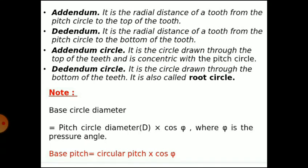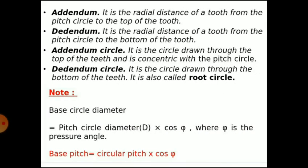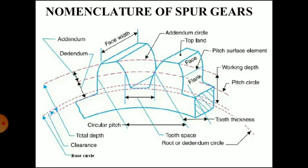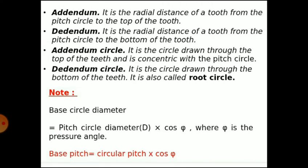Addendum is the radial distance of a tooth from the pitch circle to the top of the tooth. Dedendum is the corresponding distance below the pitch circle. The addendum circle is the circle drawn through the top of the teeth and is concentric with the pitch circle. The dedendum circle is the circle drawn through the bottom of the teeth and is also called the root circle.